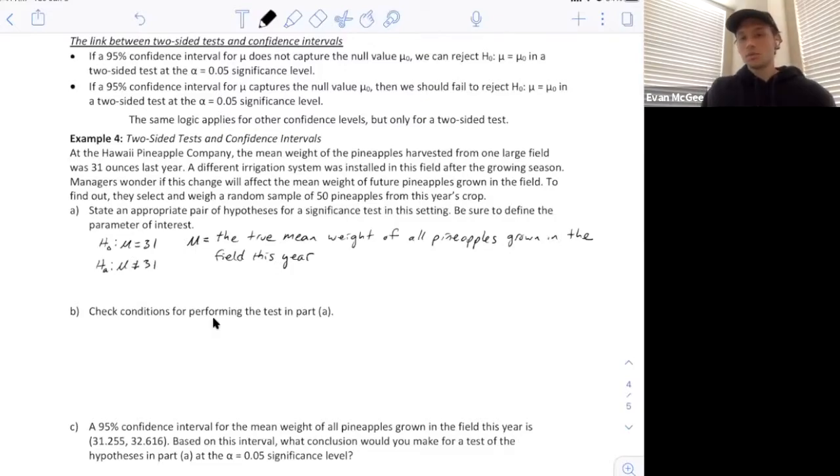Check the conditions before performing a test in Part A. So we need to see, was a random sample selected? And yes, they said that it was, sample size of 50. And the 10% condition, it's safe to assume that 50 is less than 10% of all the pineapples that were grown this year.